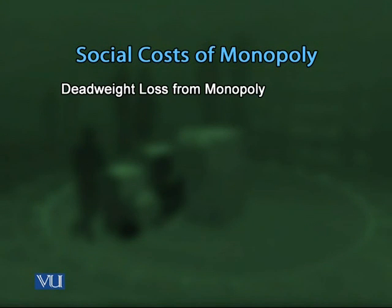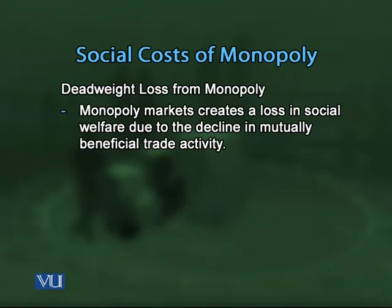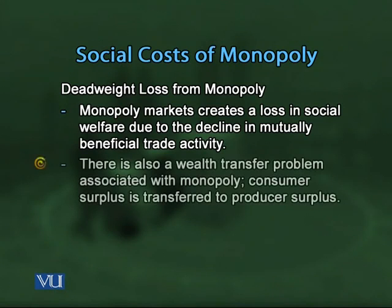There is also a wealth transfer problem associated with monopoly — consumer surplus is transferred to producer surplus. To illustrate this, we assume PTCL has many competitors (competitive market) and then compare it to a monopoly market if it reverts back to a monopoly. First, we consider the competitive market case for PTCL's unlimited long-distance telephone service, analyzing its supply and demand curves to find the profit maximizing level of output and prices.